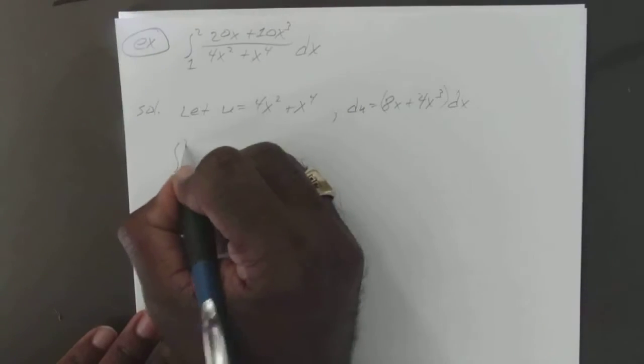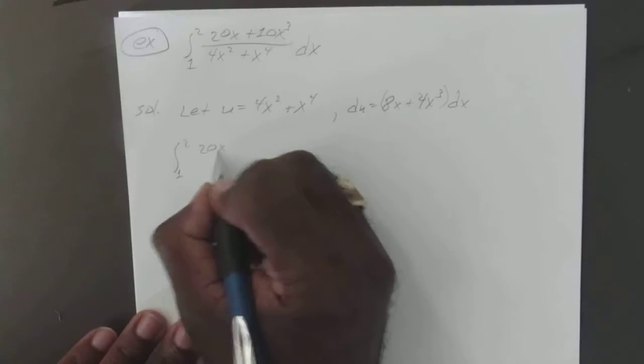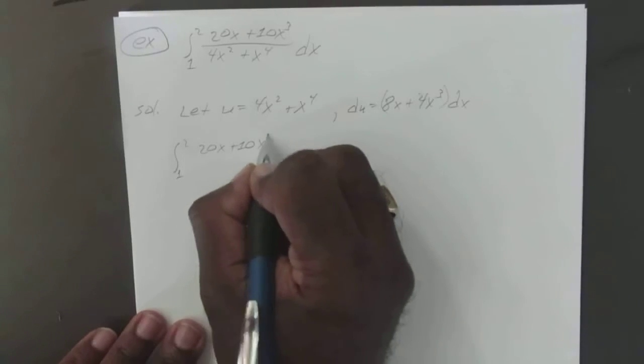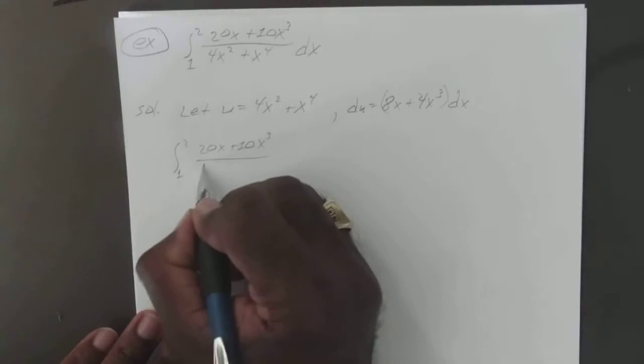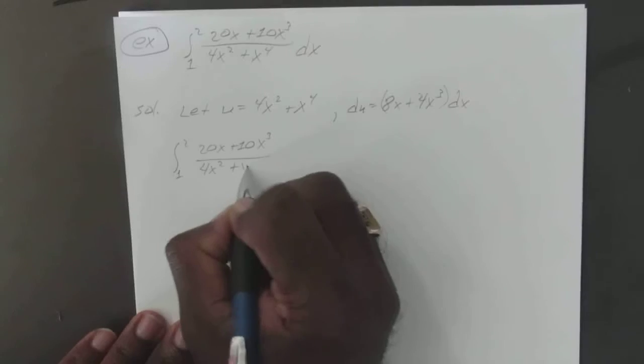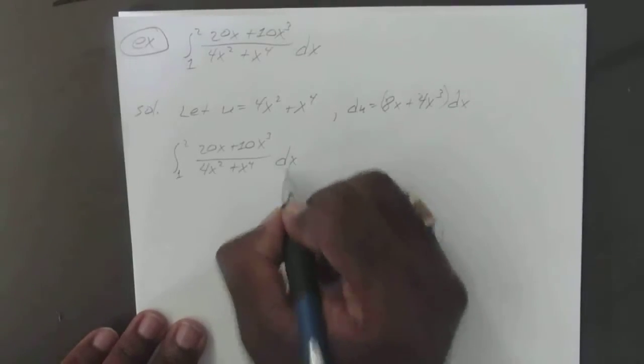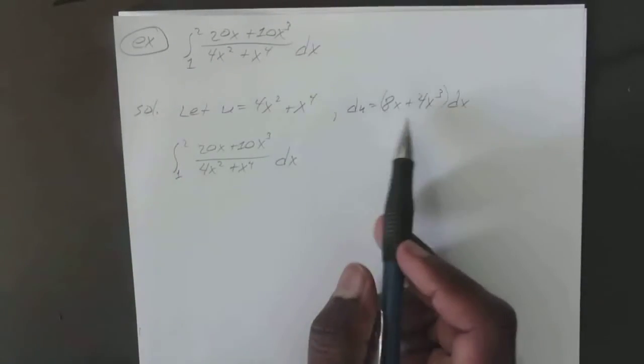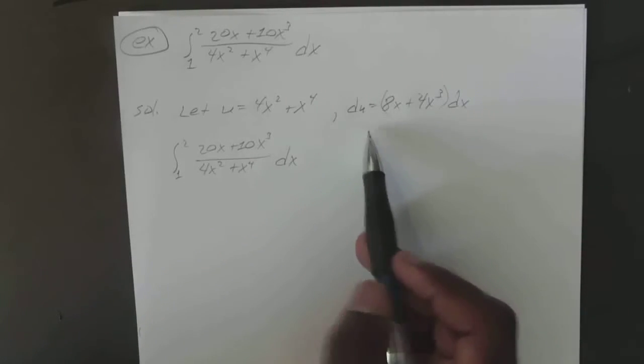The integral from 1 to 2 of 20x plus 10x to the 3rd over 4x squared plus x to the 4th dx. You want to somehow make this into your du.